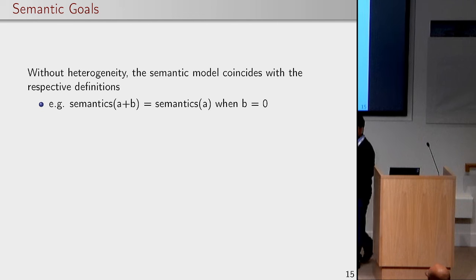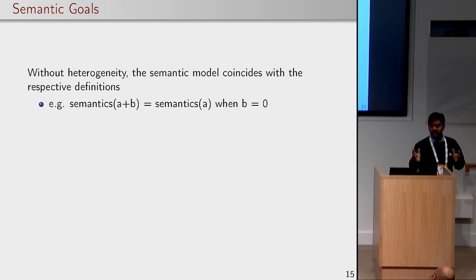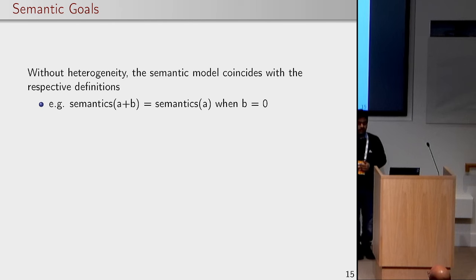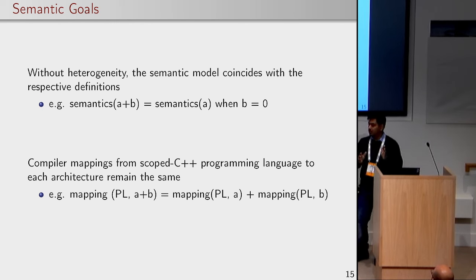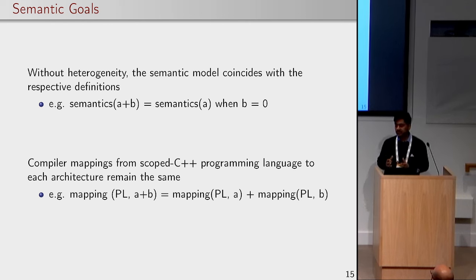When we wanted to and we have to consider this when we are trying to model these systems. There are some goals for the semantics when we are trying to combine these. The first one we wanted to do is that if we have two systems and if we combine these systems and develop a joint model for these heterogeneous ones, then if we don't have the processor of one type, then the model should fall back to the original model of the system. The second property that we wanted is that the existing compiler mapping from the existing programming languages to these architectures primitive should hold, because we don't want that if we just combine two different types of devices the compiler needs to change completely.